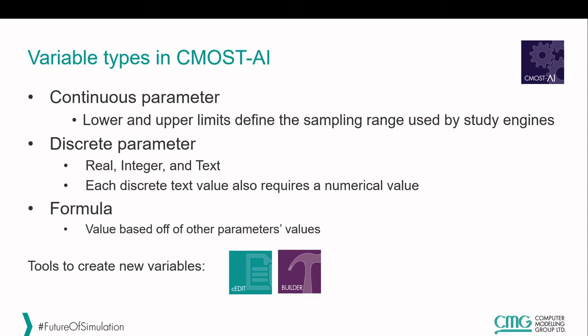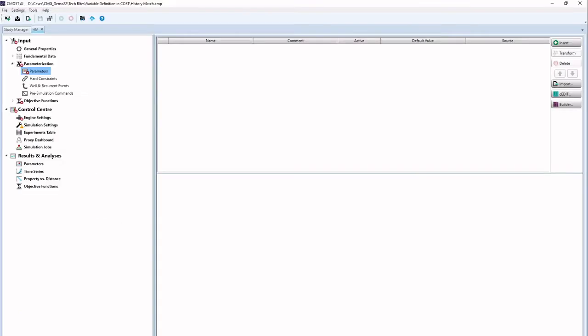To define all these variables we have options in CMOS. We can either use cedit, which is a text editor, or we can use a special version of Builder. Let's go to the CMOS interface and see how it works in the software.